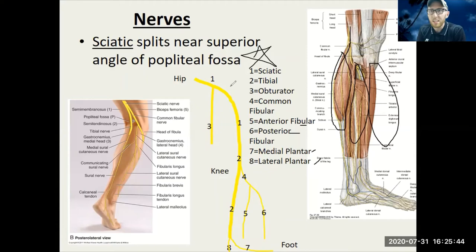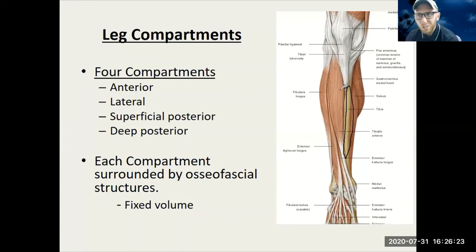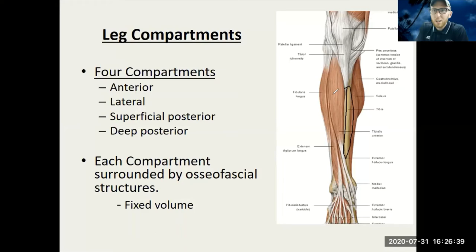We'll actually break the posterior compartment into two: superficial posterior and deep posterior. Notice the medial side — there's nothing but bone. Feel your shin bone on the medial side and you'll feel the tibia. That's your shin bone. You can't really feel your fibula because the fibula is covered with muscle.